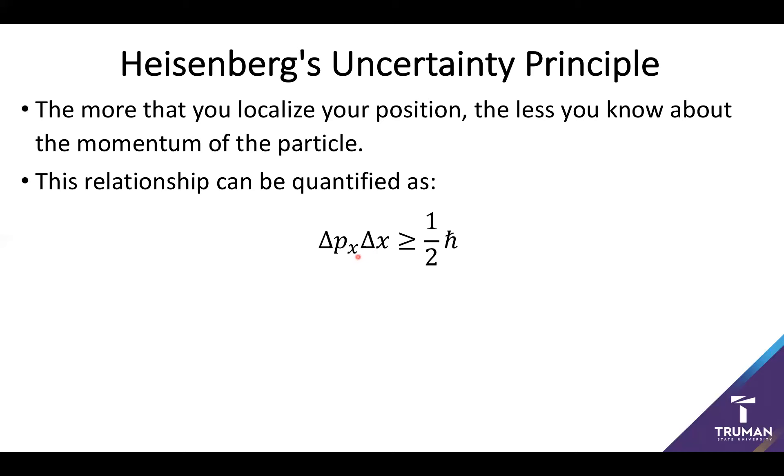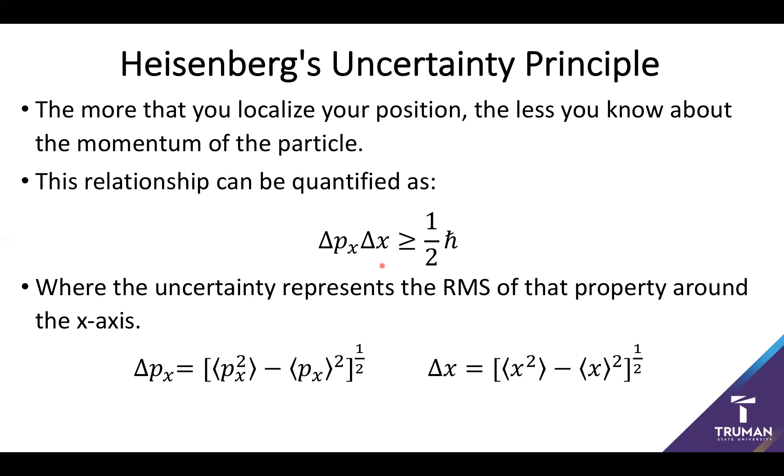Now when it comes to the nuts and bolts of the Heisenberg's uncertainty principle, it's also very important that we know what we're talking about when we say uncertainty in position and uncertainty in momentum. So what we're really representing these as is the root mean squared about the property. In this case, since we're looking at momentum and position along a unidirectional x-axis, this means that it's going to be the root mean squared of these properties around that set axis.